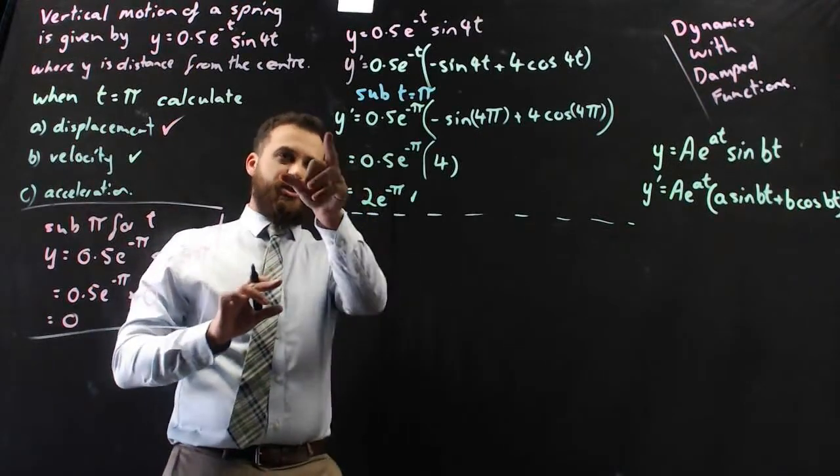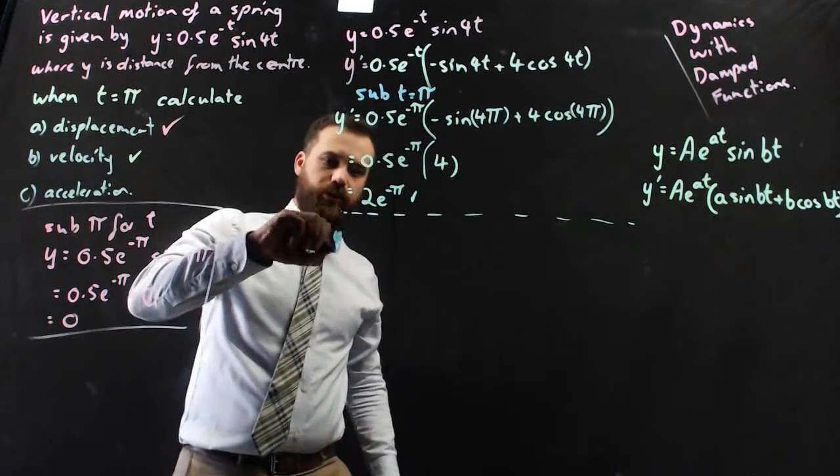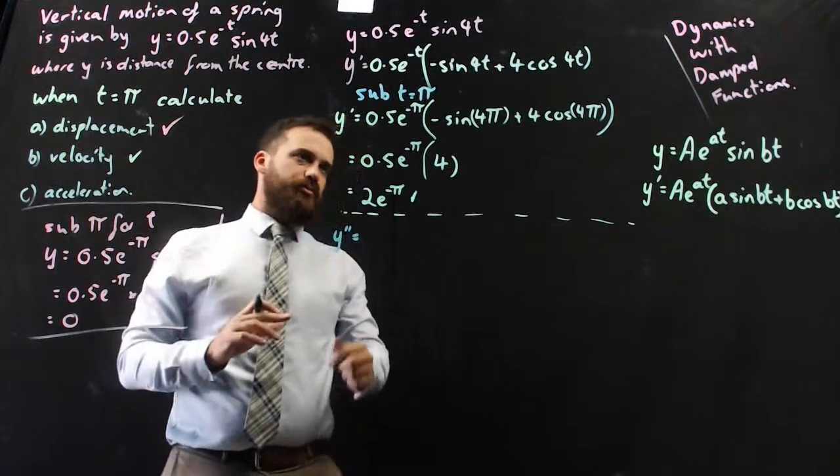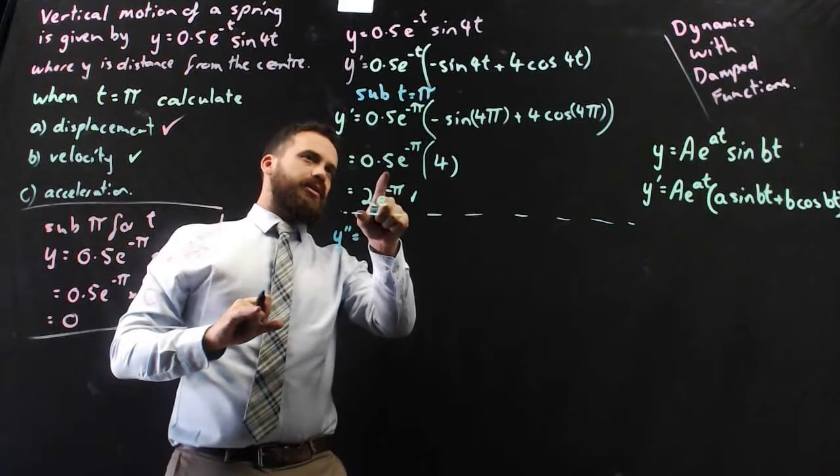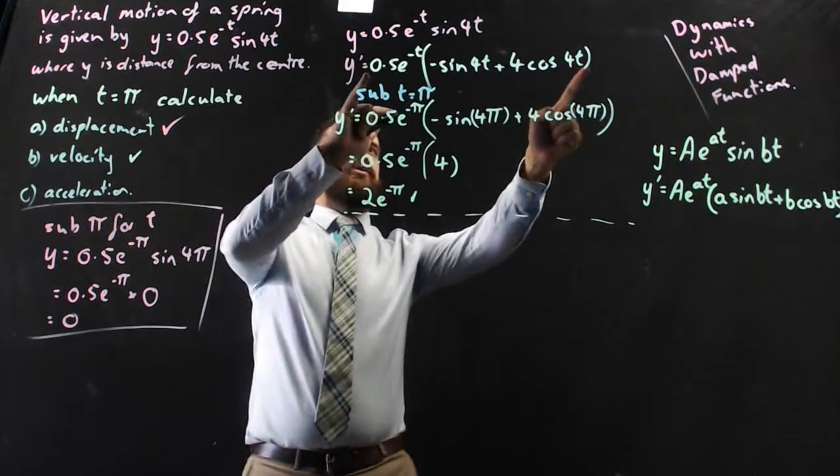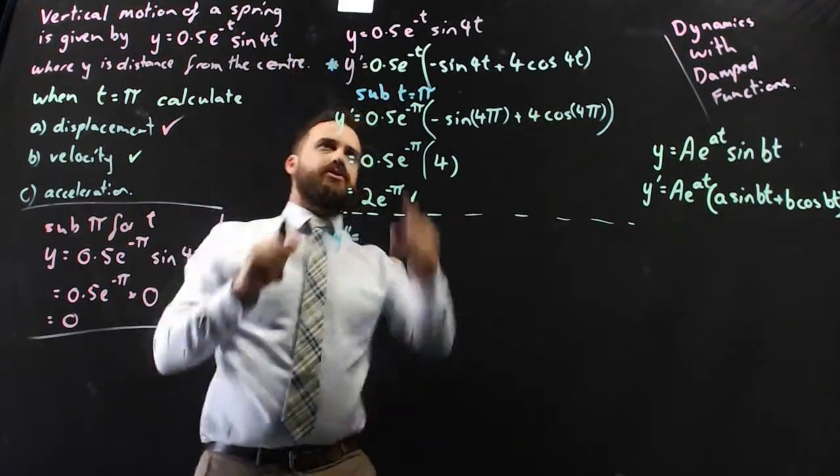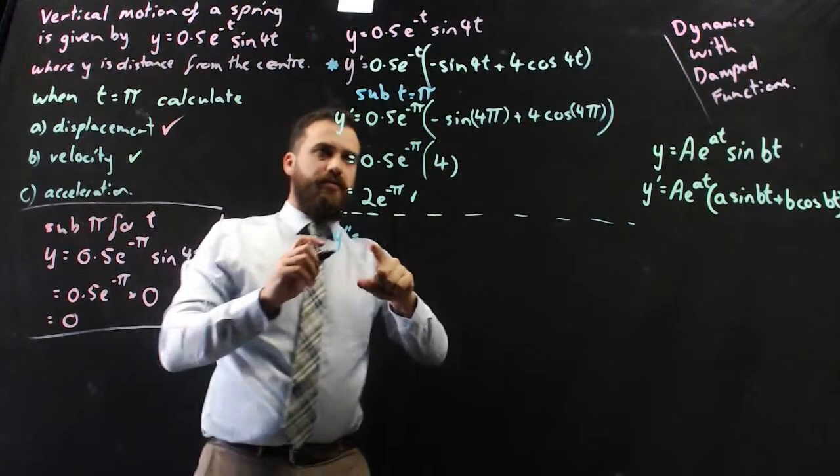Now to do the acceleration, we're going to have to do a second derivative, y double dash. This is where it gets complicated because you've got to do the whole derivative of that. Now I'm just going to rewrite that. Actually, I should use this one because it's got the t's, not the pi's.